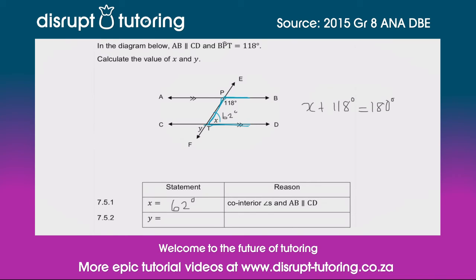I suggest every time you find an angle, write the angle in because it could help you with the next angle. Now they've asked us to find y. So let's see where y is — y is over here, and what's nice about y is, do you see there's this intersection of these two lines?